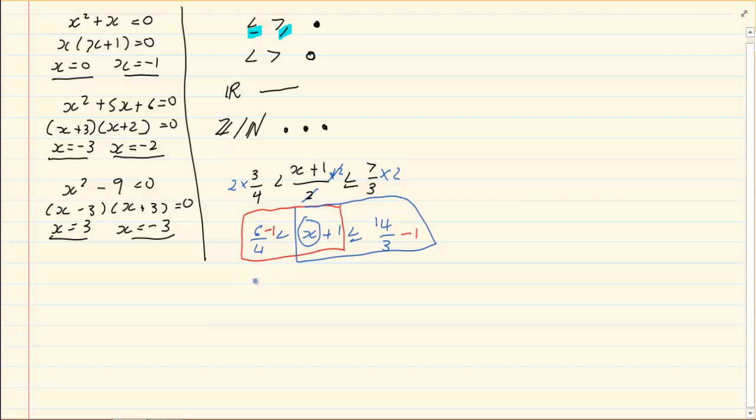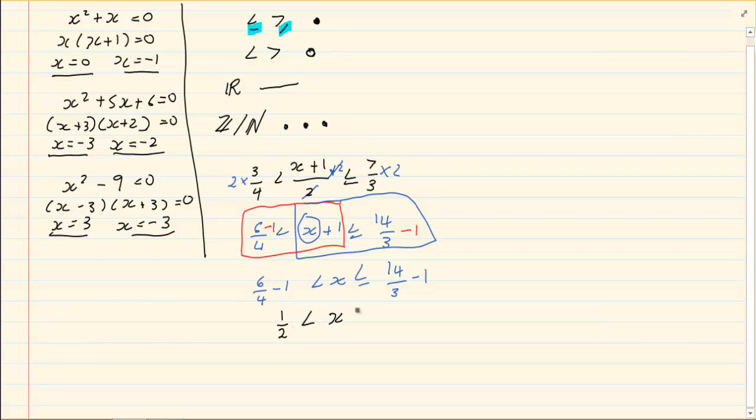So we have 6 over 4 minus 1, and x is greater than half but smaller and equal to, you mustn't forget the equal to sign, 11 over 3.